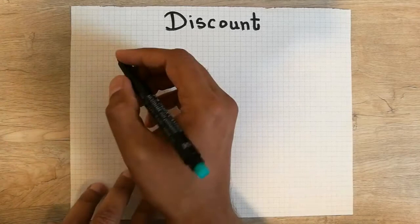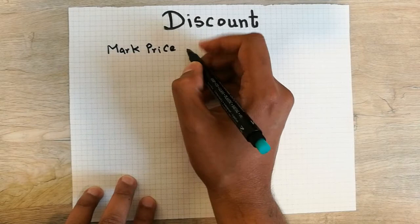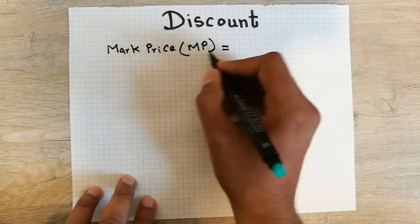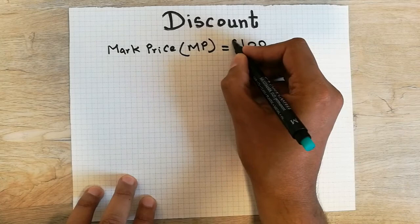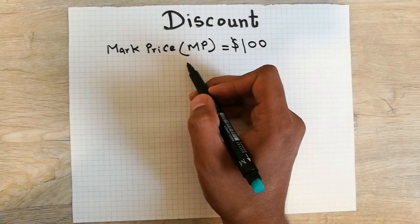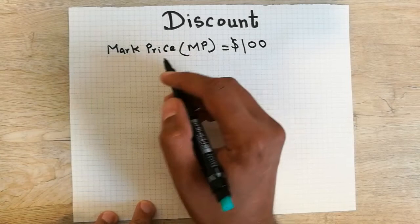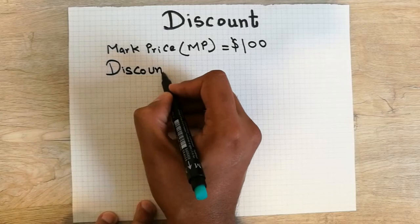The first term we use is called mark price, also written as MP. For example, we have a mark price of an item which is 100 dollars. Mark price is the actual price of the item — it's not the cost price. It is the price you see on the label when you go to a shop or a mall. That price is called mark price, market price, or list price.